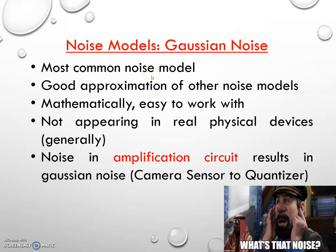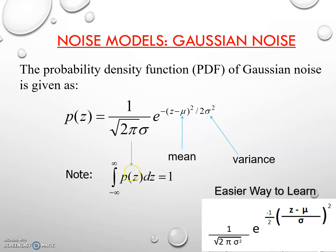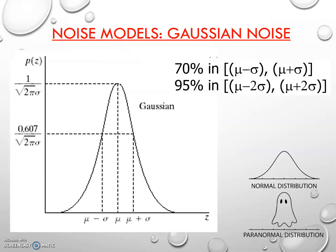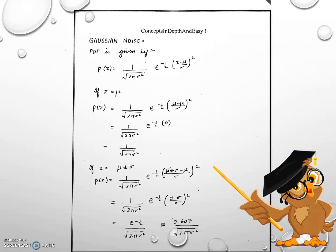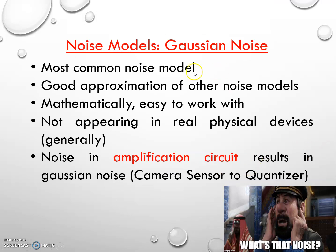That is the reason Gaussian is the most common noise model — some noise models can be approximated as Gaussian. But why do we approximate with Gaussian? Mathematically, the Gaussian noise model is easy to work with. We'll be calculating the mean and variance, and I'll put a link in the description below explaining how mean and variance are calculated for this particular function. So mathematically, it is very easy to work with the Gaussian model.